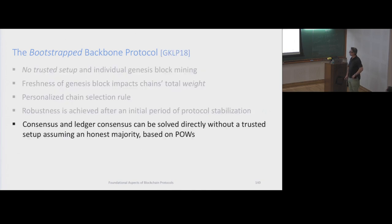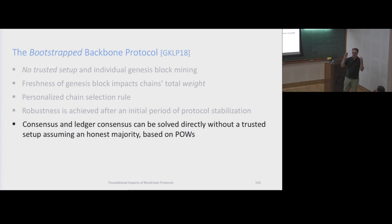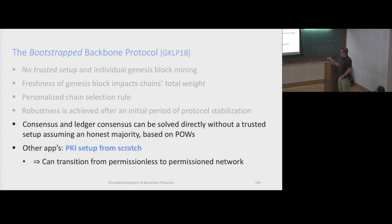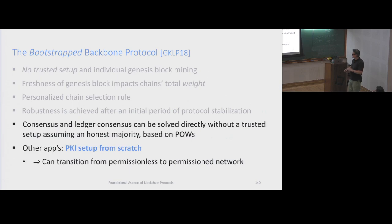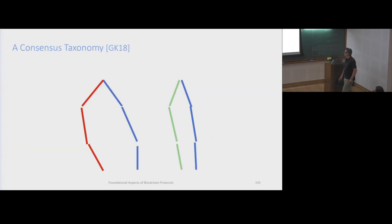After the challenge exchange, you do some convergence, and from that point on it's like you converged on a genesis block and can apply the backbone protocol. So no genesis block, and then backbone gives us our applications - consensus and ledger without trusted setup. What we're achieving is consensus with honest majority and no trusted setup, which in the classical world was impossible. Another application is that without a trusted setup you can get a PKI from scratch, transitioning from permissionless network to the classical permissioned network without the help of a trusted party.